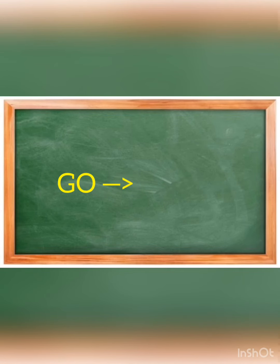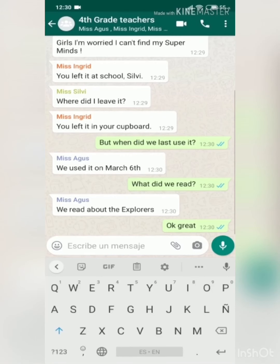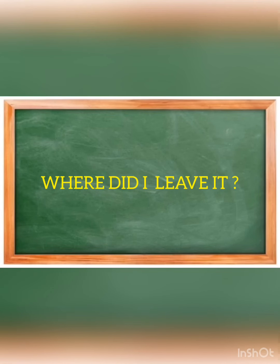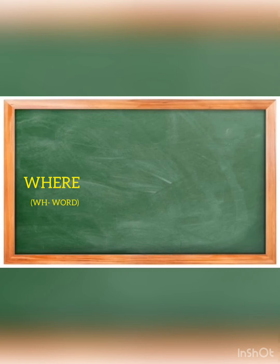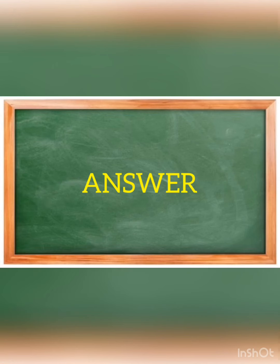For example, go becomes went. As Miss Sylvie said, there is a structure when asking questions. Let's go over the dialogue you have just read from WhatsApp. The first question is: where did I leave it? Where is the WH question word, did is the auxiliary, and I is the person. Leave is the verb in the infinitive form.